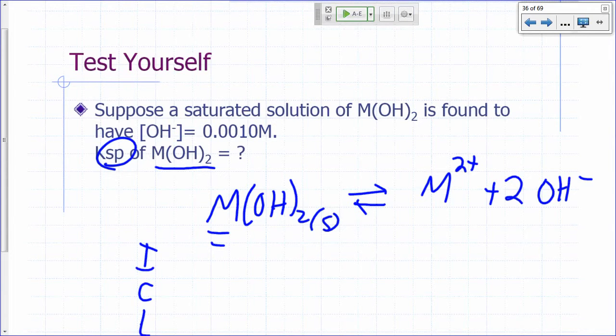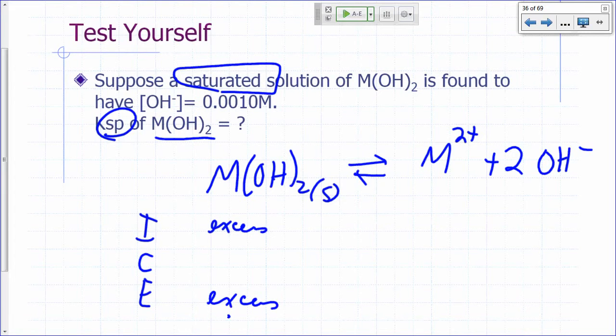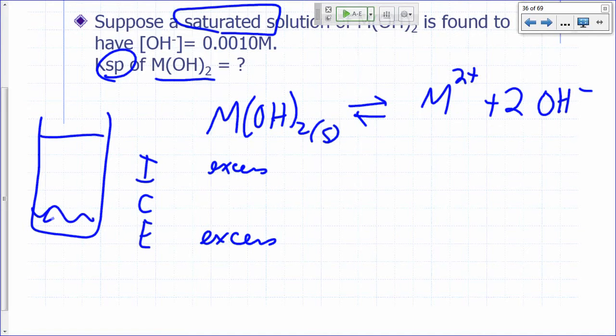So again, you set up your ice table. Let's say you start off with an excess of this, an excess of a solid. Saturated solution means you have a lot of it. You have an excess at the end. And you don't worry about it because the activity is just going to be equal to 1. Saturated simply means that if you mix it with water, you still have some solid left behind there. So you have your M²⁺ and your hydroxide ions here in equilibrium with your solid. So you have a large excess and the activity of that solid is equal to 1.